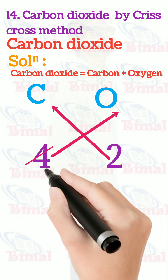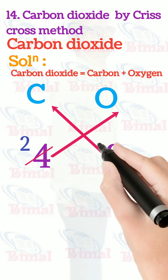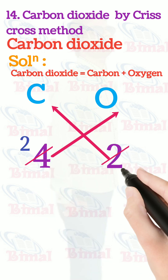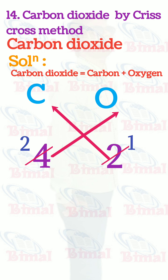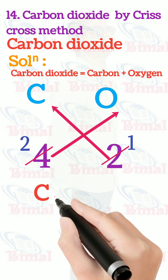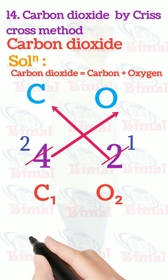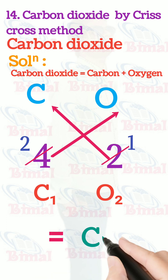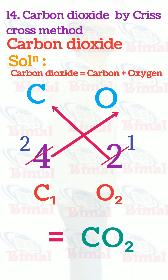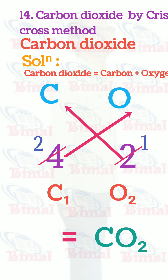we cancel and divide 4 by 2 to get 2, and 2 divided by 2 to get 1. Exchanging the valences, we write C1 and O2, which equals CO2. We don't write C1 — in place of C1 we simply write C. So CO2 is the molecular formula.